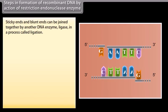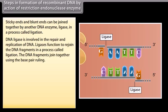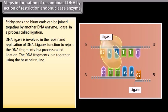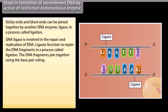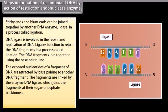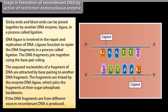Sticky ends and blunt ends can be joined together by another DNA enzyme — ligase — in a process called ligation. DNA ligase is involved in the repair and replication of DNA. Ligases function to rejoin the DNA fragments in ligation. The exposed nucleotides of a fragment of DNA are attracted by base pairing of another DNA fragment. The fragments are linked by the enzyme DNA ligase, which joins the fragments at their sugar-phosphate backbones. If the DNA fragments are from different sources, recombinant DNA is produced.